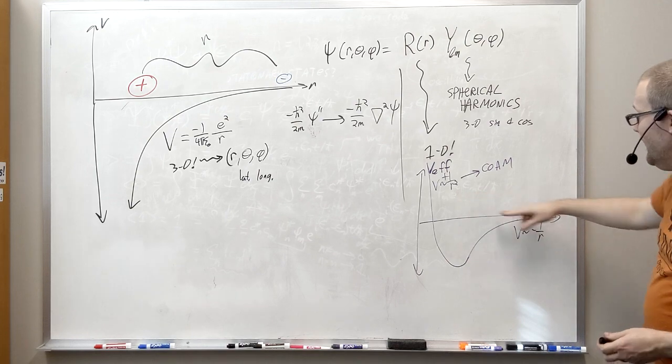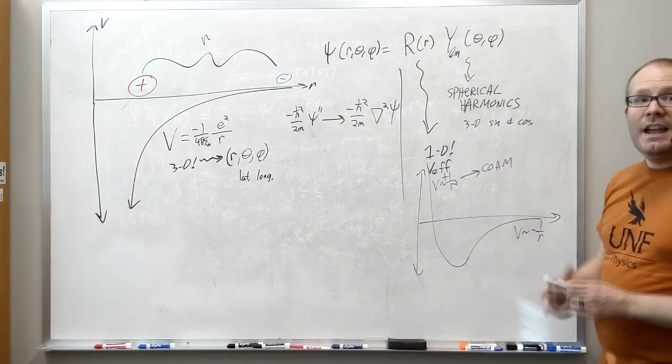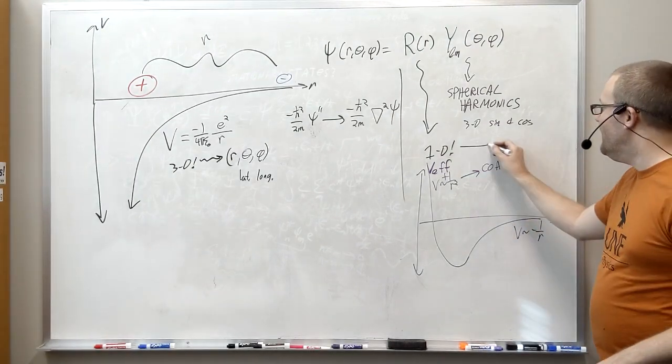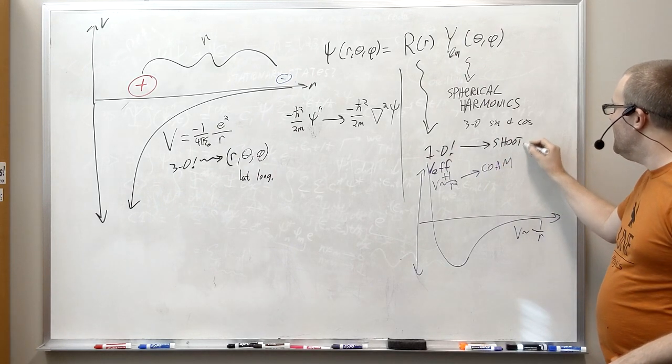What that means is, I can solve - I can use this as my potential energy in my one-dimensional Schrodinger equation, and I can go back to the shooting method.